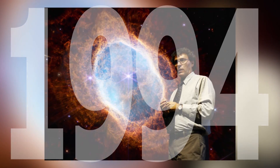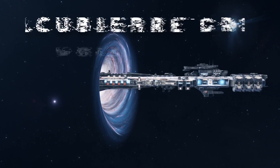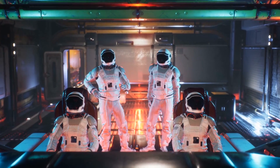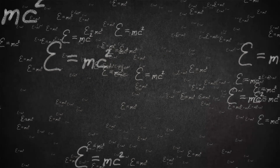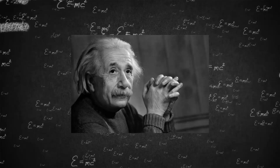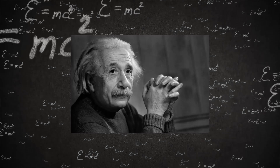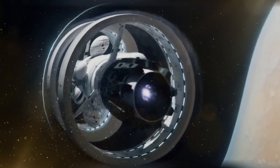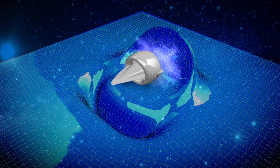In 1994, theoretical physicist Miguel Alcubierre proposed a groundbreaking concept known as the Alcubierre drive, which explores the idea of achieving apparent faster-than-light travel. This speculative concept is rooted in a unique interpretation of Einstein's field equations describing the interplay of spacetime and energy. The drive's core principle involves contracting space in front of a spacecraft while simultaneously expanding space behind it.